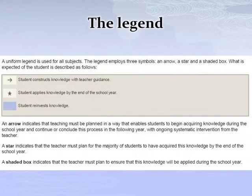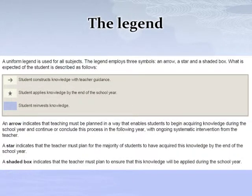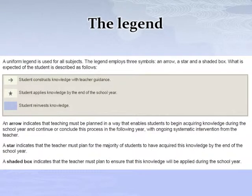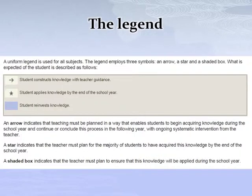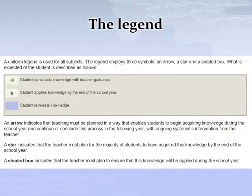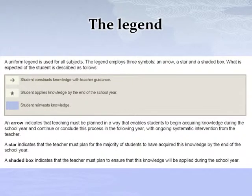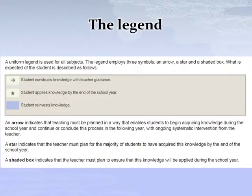To be able to read the progression of learning, you need to understand its legend. The arrow means that students are constructing their knowledge with teacher guidance — they are learning. The star means that the student is able to apply the knowledge by the end of the school year. The shaded area means that the student is reinvesting the knowledge.